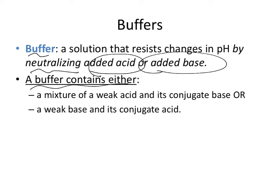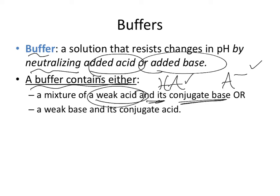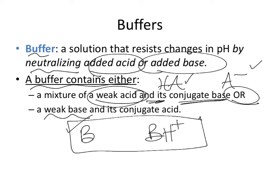A buffer is made up of a mixture of a weak acid and its conjugate base — we represent those as HA and A⁻ — or a weak base and its conjugate acid, B and BH⁺. It has to have both an acid and a base so that it can neutralize any contaminant that's either acidic or basic.